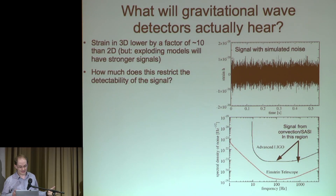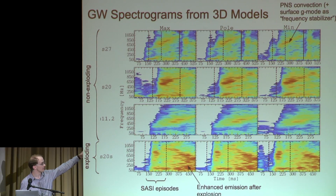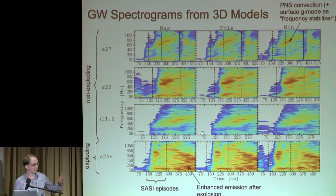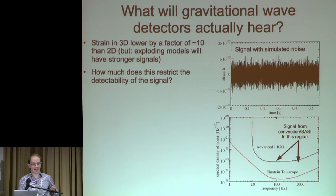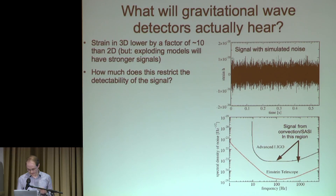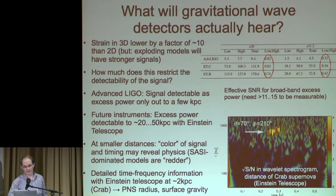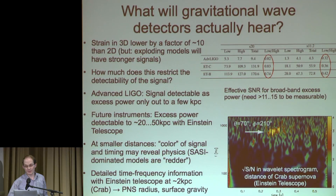The final question is: given this reduction of the signal in 3D and the interesting structure with a SASI band and relatively narrow-banded high-frequency G-mode emission, what would you still see in the detectors, and could you extract any physics from it? Given the noisiness of the real-time signal, that's quite a challenge. For advanced LIGO, for current detectors, it actually looks pretty bleak. Unless you have massive progenitors giving a stronger gravitational wave signal, you tend to barely reach the limit of detectability at a supernova distance of 10 kiloparsecs.